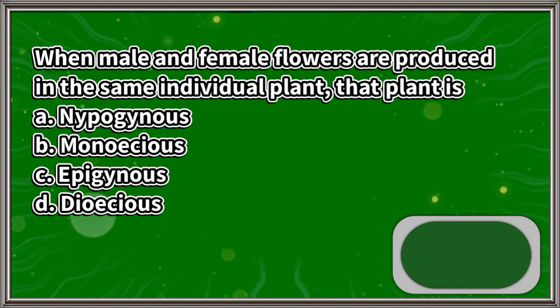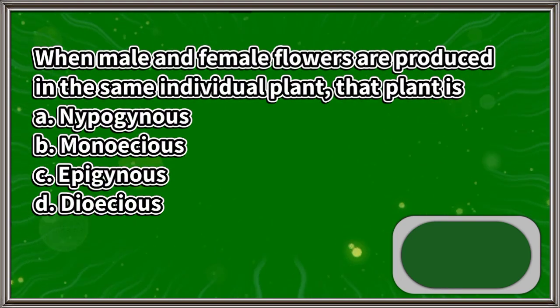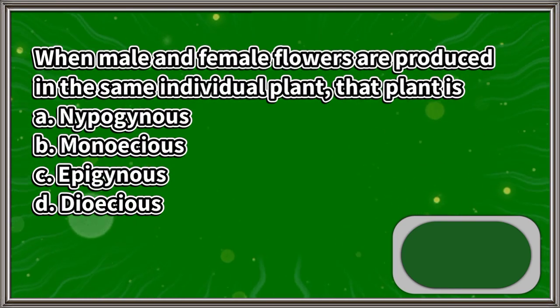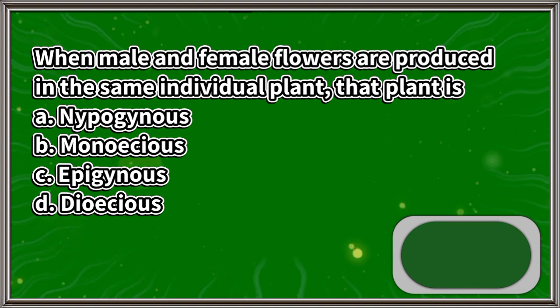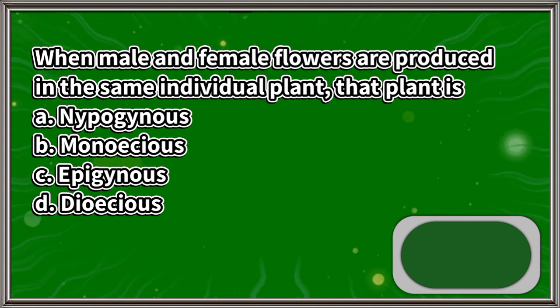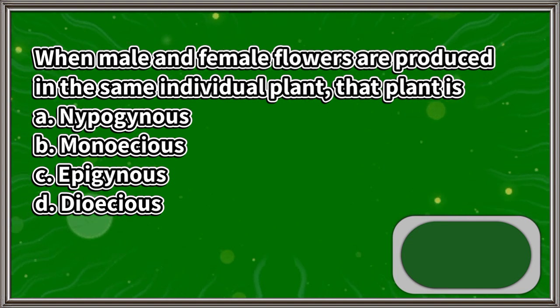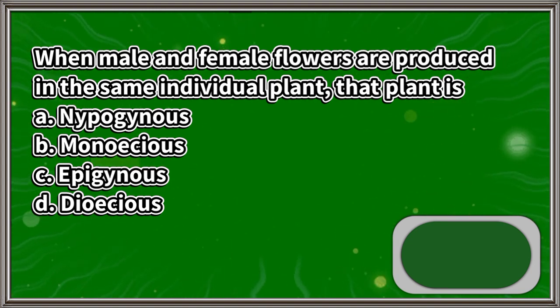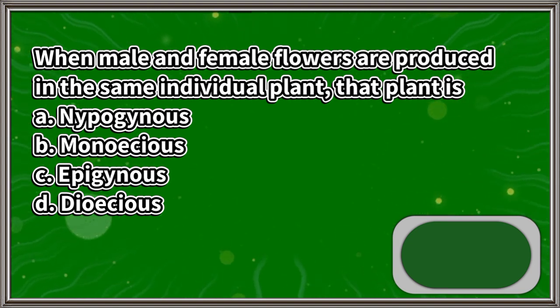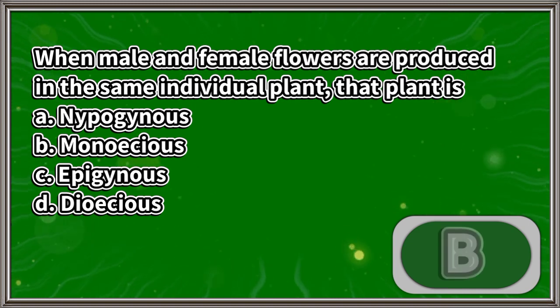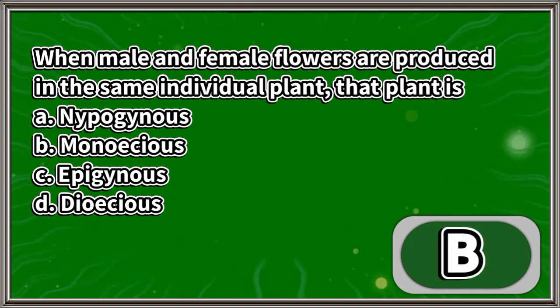When male and female flowers are produced in the same individual plant, that plant is: A. Hypogynous, B. Monoecious, C. Epigynous, D. Dioecious. The answer is letter B.